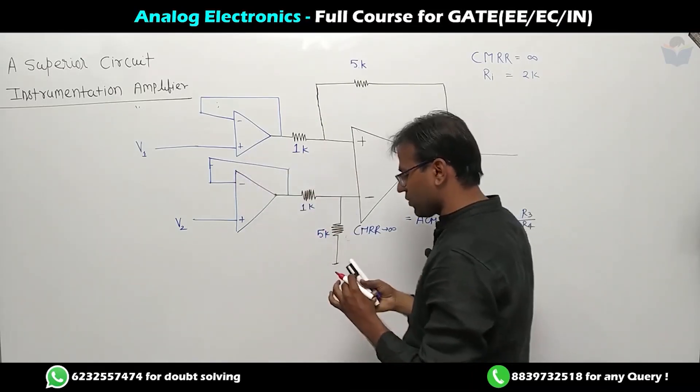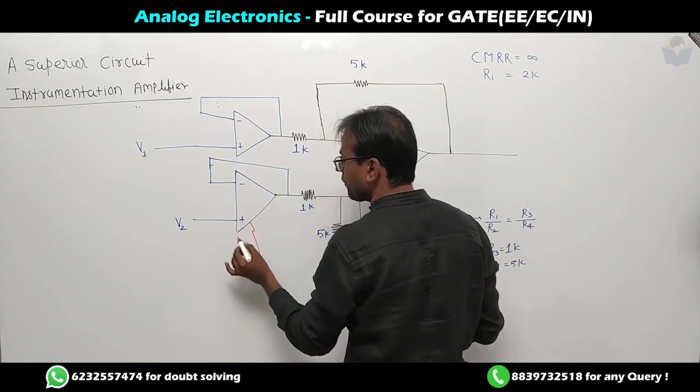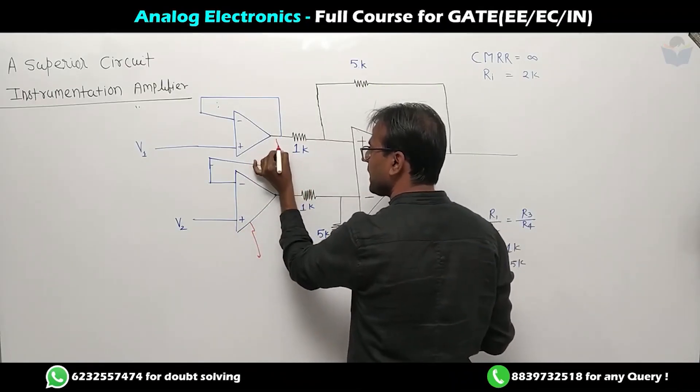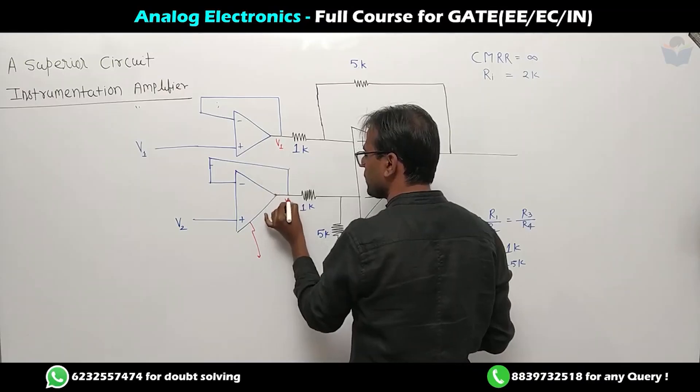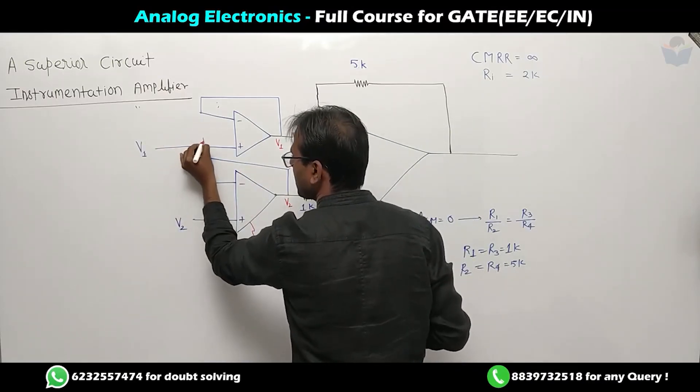To convert this resistance to high resistance, we used two voltage followers. So the inputs V1 and V2 are still the same inputs V1 and V2, but the input terminal draws zero current.